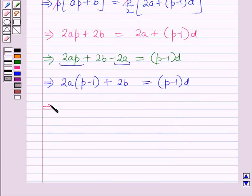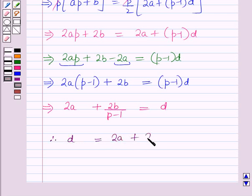This implies on dividing each term by p minus 1 it will be 2a plus 2b over p minus 1 is equal to d. Therefore d equals 2a plus 2b over p minus 1.